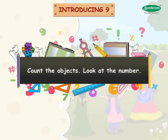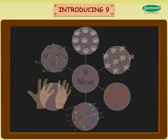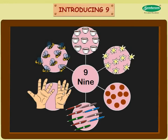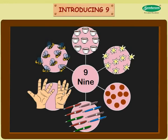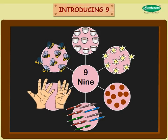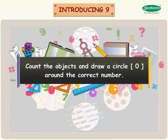Count the objects. Look at the number. Nine cups. Nine jasmines. Nine dots. Nine pens. Nine fingers. Nine bees. Count the objects and draw a circle O around the correct number.